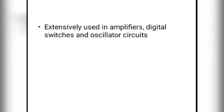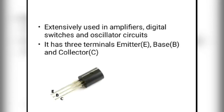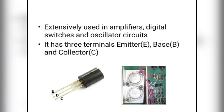Transistors are extensively used in amplifiers, digital switches, and oscillator circuits. Transistors have three terminals: emitter (E), base (B), and collector (C). The main types of transistors are: bipolar junction transistor (BJT), unijunction transistor (UJT), and field effect transistor (FET).